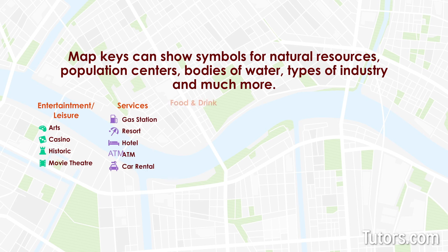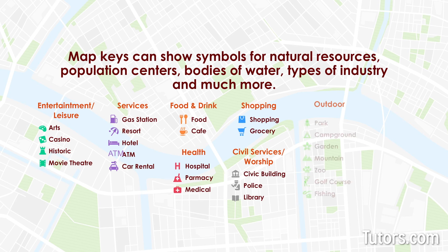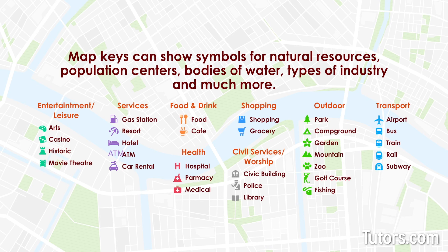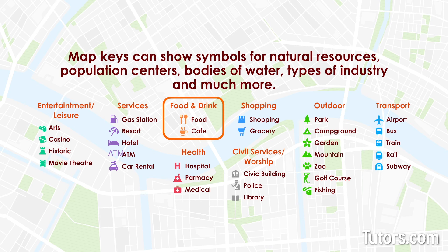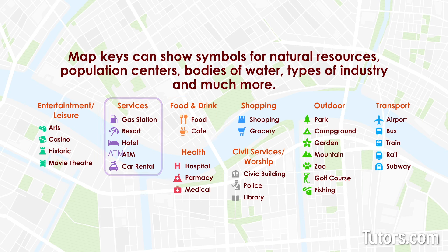Here are some different symbols that you will find on Google Maps. As you can see, different colors represent different categories: green for outdoors, orange for dining and drinks, purple for services, and so on.